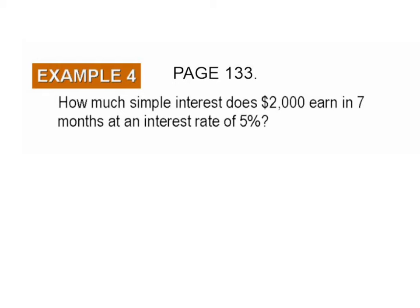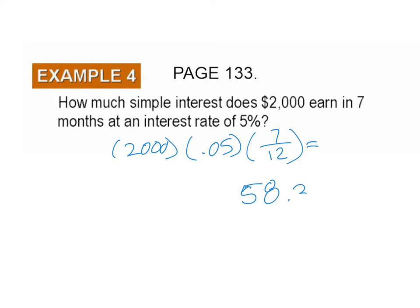Example four, also on page 133: how much simple interest does $2,000 earn in seven months at an interest rate of 5%? Here we don't have a full year — our time is measured in years — but we know it's seven months and there are 12 months in a year. So we write 2,000 times 0.05 times 7 over 12. Plugging that into your calculator gives about $58.33. Get that down and hit play when you're ready to proceed.